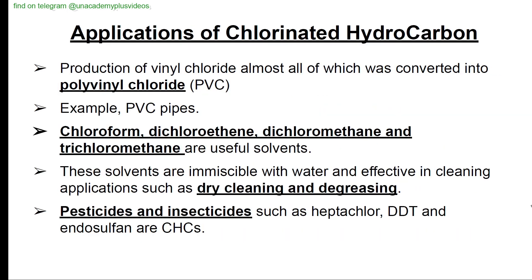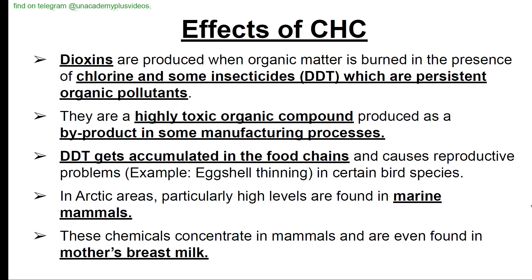Applications of chlorinated hydrocarbons include production of polyvinyl chloride (PVC pipes), solvents like chloroform, dichloroethane, and dichloromethane used in dry cleaning and degreasing, and pesticides/insecticides such as heptachlor, DDT, and endosulfan. Effects: dioxins are produced when organic matter is burned in the presence of chlorine. DDT is a persistent organic pollutant — highly toxic, produced as a by-product in some manufacturing processes. DDT accumulates in food chains causing reproductive problems like egg shell thinning in certain bird species. In Arctic areas, particularly high levels are found in marine mammals and even in mother's breast milk.